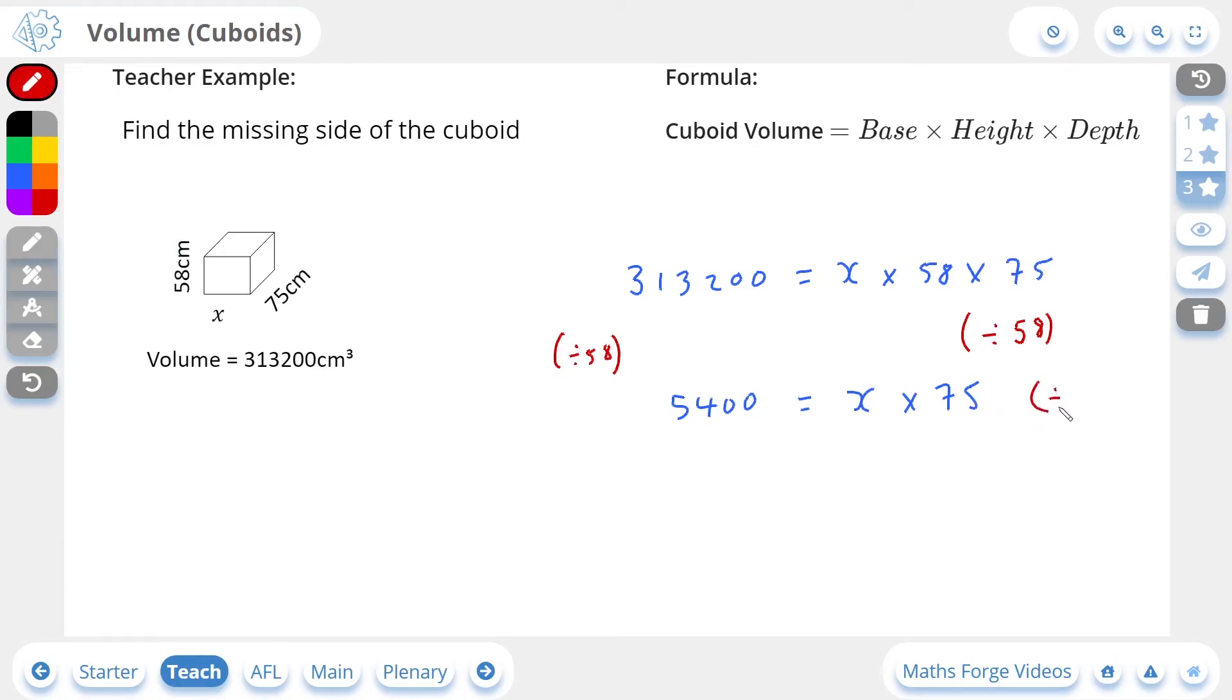So the next stage here is to divide through by 75. This now leaves us with 72 on the left-hand side, because 5,400 divided by 75 is 72. And on the right-hand side, it just leaves us with x, since the times 75 and the divided by 75 cancel out. So the missing side should be 72 centimeters.